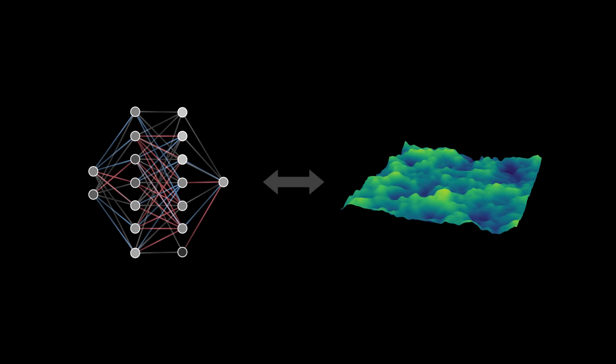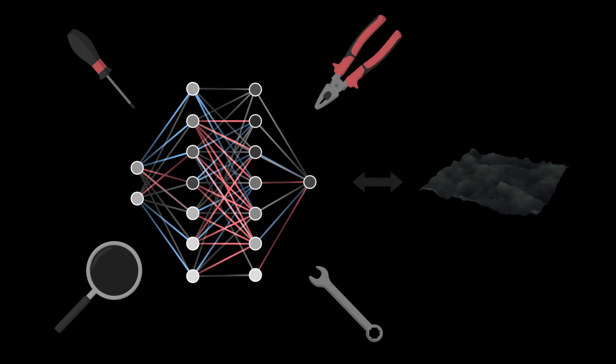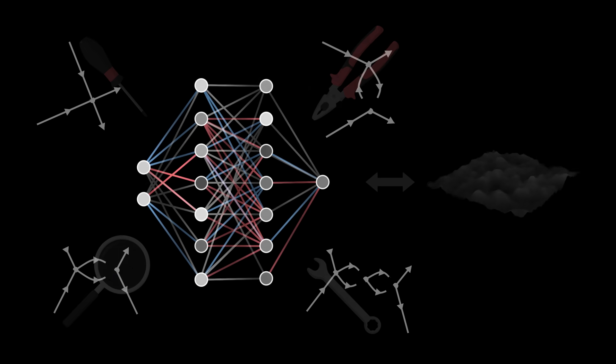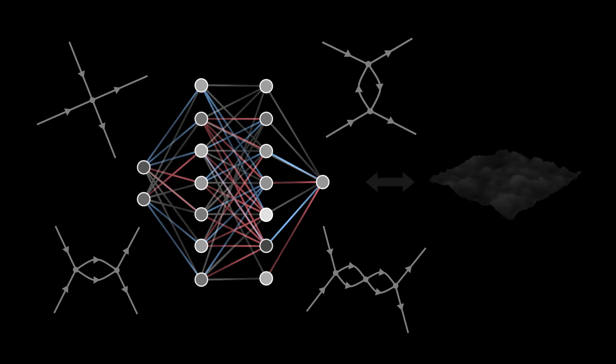This correspondence also allows us to study neural networks using tools from physics, such as Feynman diagrams, which are generally used to study interactions between particles.